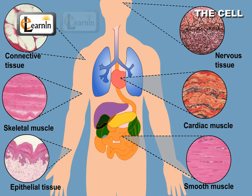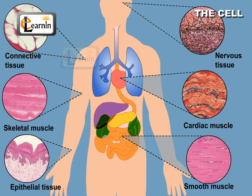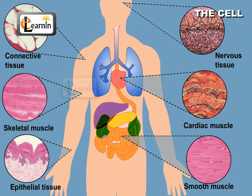Similar functions in multicellular organisms are carried out by specific groups of specialized cells that form different tissues. These tissues, in turn, form the various organs.